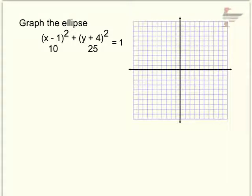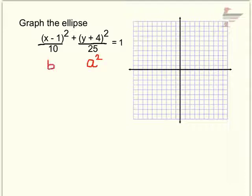The first example: graph the ellipse (x − 1)²/10 + (y + 4)²/25 = 1. It's an ellipse because it has x squared plus y squared equaling 1, so it's in standard form. A squared is the larger number, so a squared is 25 and b squared is 10. Because a squared is underneath y, I'm going to be stretched in the vertical direction.